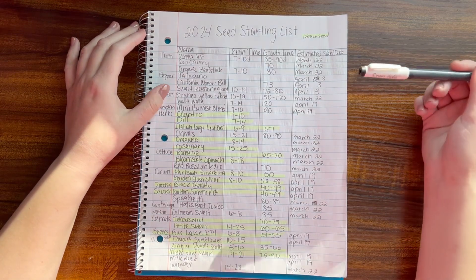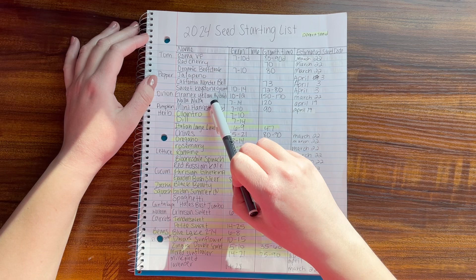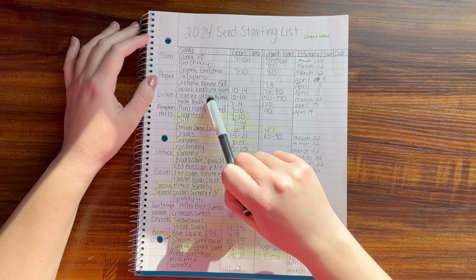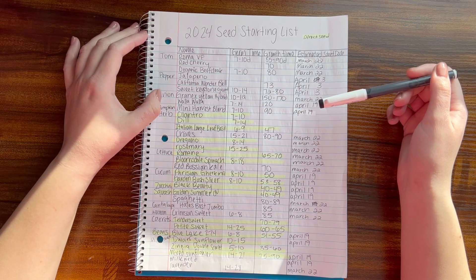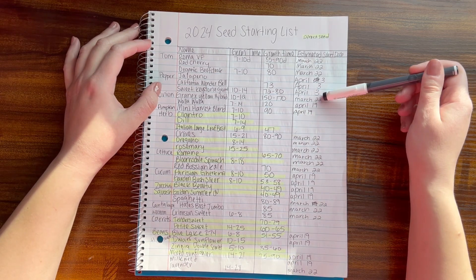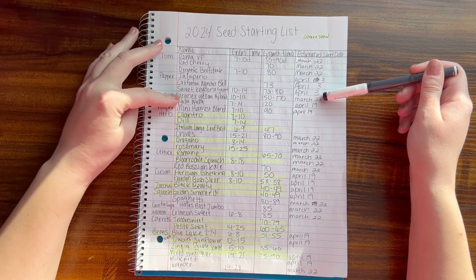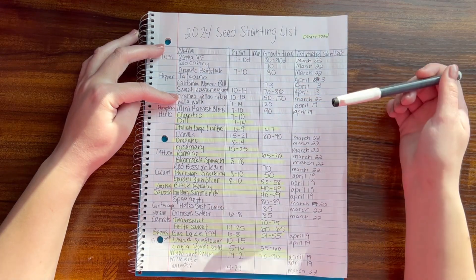For onions, I was planning on starting some. I haven't decided yet, but I actually don't need to start them as early as I thought I did. I'll start the Gran X Yellow Hybrid on the 22nd because it has a longer growth period, 150 to 170 days.